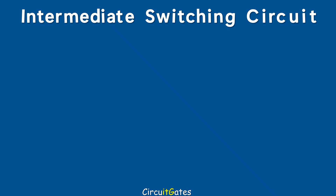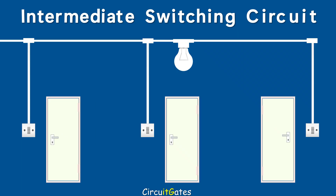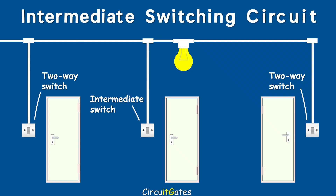Let us look at the third light switching circuit called the intermediate switching circuit. An intermediate switching circuit is a light switching circuit in which a lamp or lamps are controlled from three or more different locations. This type is used to control lamps in places such as long corridors, stairways, and rooms with more than two entrances. In this video, we are looking at an intermediate switching circuit used to control lamps from three different locations, which requires one intermediate switch.